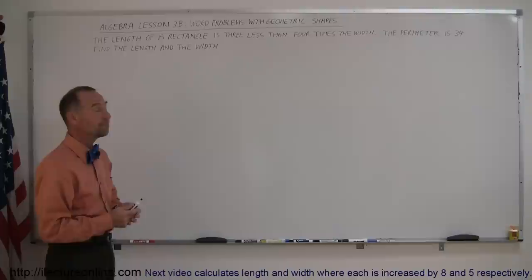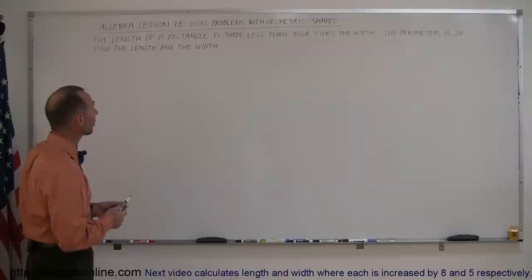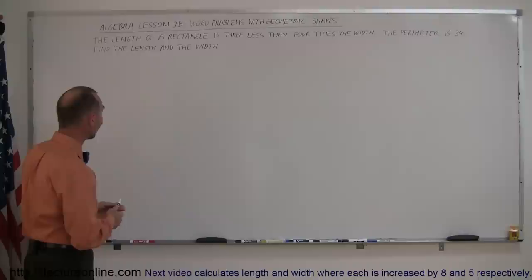And the problem we have here is the length of a rectangle is 3 less than 4 times the width. The perimeter is 34. Find the length and the width.